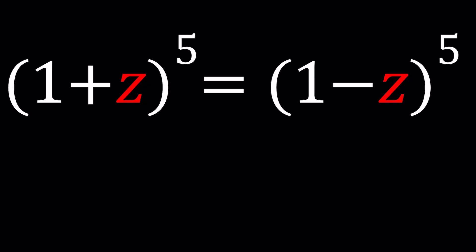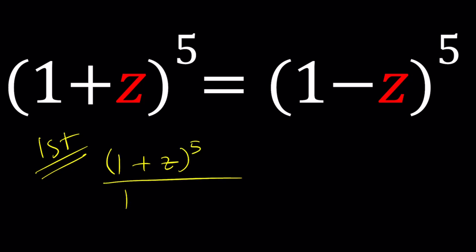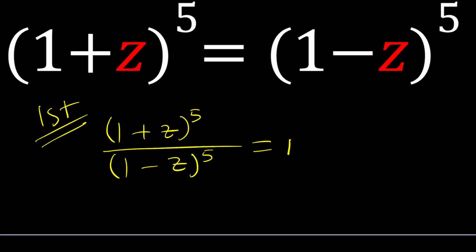Here's what I'd like to do: divide both sides by 1 minus z to the 5th. So we get 1 plus z to the 5th divided by 1 minus z to the 5th equals 1. Notice that z to the 5th comes with a positive sign in the numerator and a minus sign in the denominator.